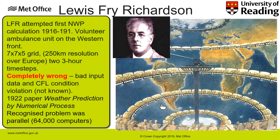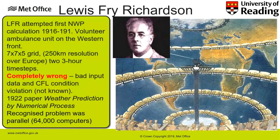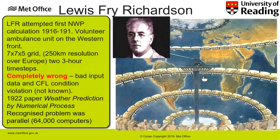Richardson imagined a parallel supercomputer with 64,000 computers — where in 1922 a 'computer' was a person doing calculations by hand. People would pass bits of paper with numbers to their neighbors, with a conductor doing synchronization to keep everyone in lockstep. This is exactly what a modern supercomputer does, just with processors instead of people — he recognized this already in 1922 before any real computers existed.